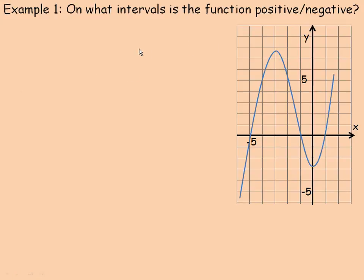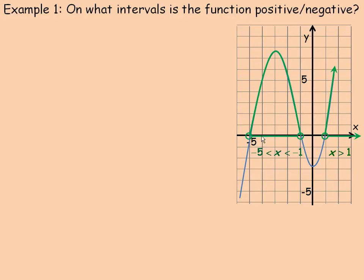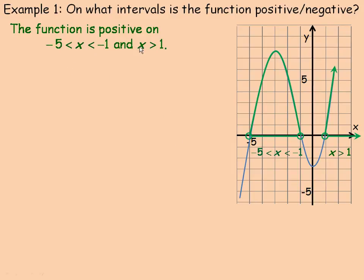On the second example page, we're again asked on what intervals is this function positive or negative. For positive values, the traced interval is between negative five and negative one, so we write x is greater than negative five and less than negative one. Another place with positive y values is to the right of one, so the interval is x is greater than one. The function is positive on the intervals negative five to negative one and greater than positive one.